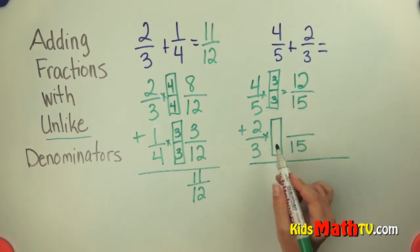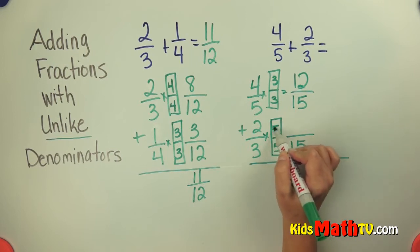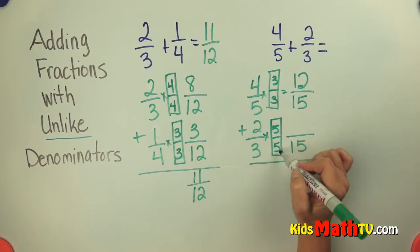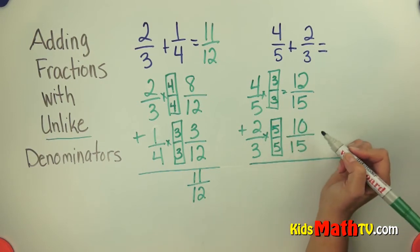Over here I'm going to multiply by 5 on the bottom. So I multiply by 5 on the top. My numerator and denominator by the same number. 10 fifteenths.